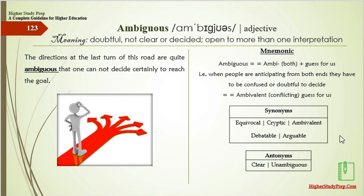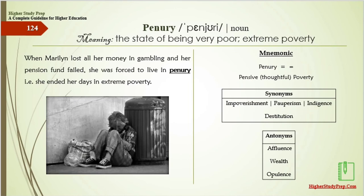The antonyms of ambiguous are clear or unambiguous. Penury means the state of being extremely poor. Mnemonic: penury — pensive or thoughtful poverty. When Marilyn lost all her money in gambling and her pension fund failed, she was forced to live in penury, ending her days in extreme poverty. Synonyms are impoverishment, pauperism, indigence, or destitution. The antonyms are affluence, wealth, or opulence.